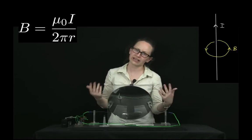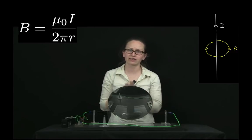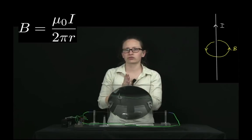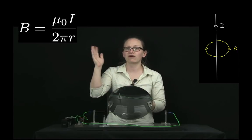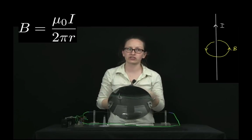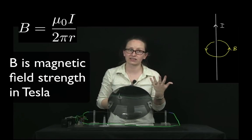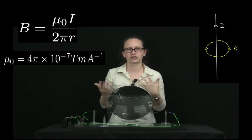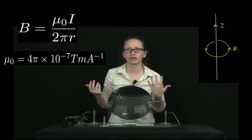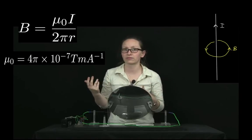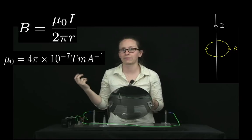So in order to calculate the magnetic field strength, we can use the formula B is equal to μ₀I divided by 2πr. Now, in this equation, B is the magnetic field strength in Tesla. μ₀ is a constant known as the permeability of free space. μ₀ is equal to 4π times 10 to the minus 7 tesla meters per amp.